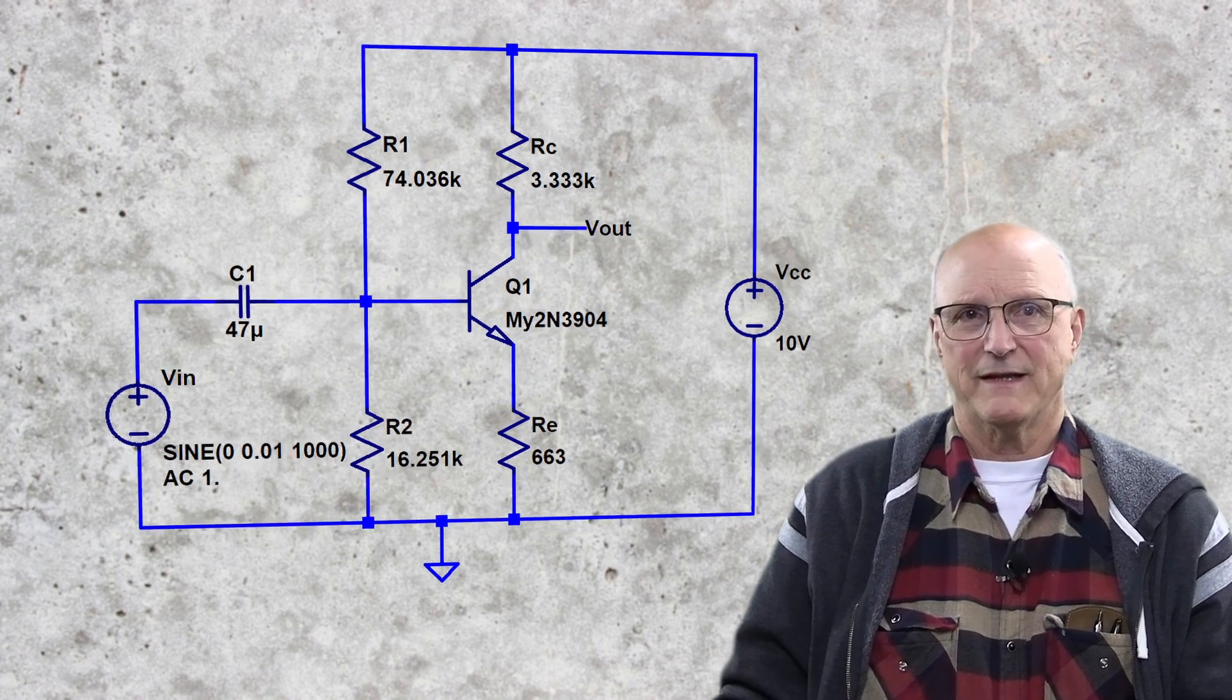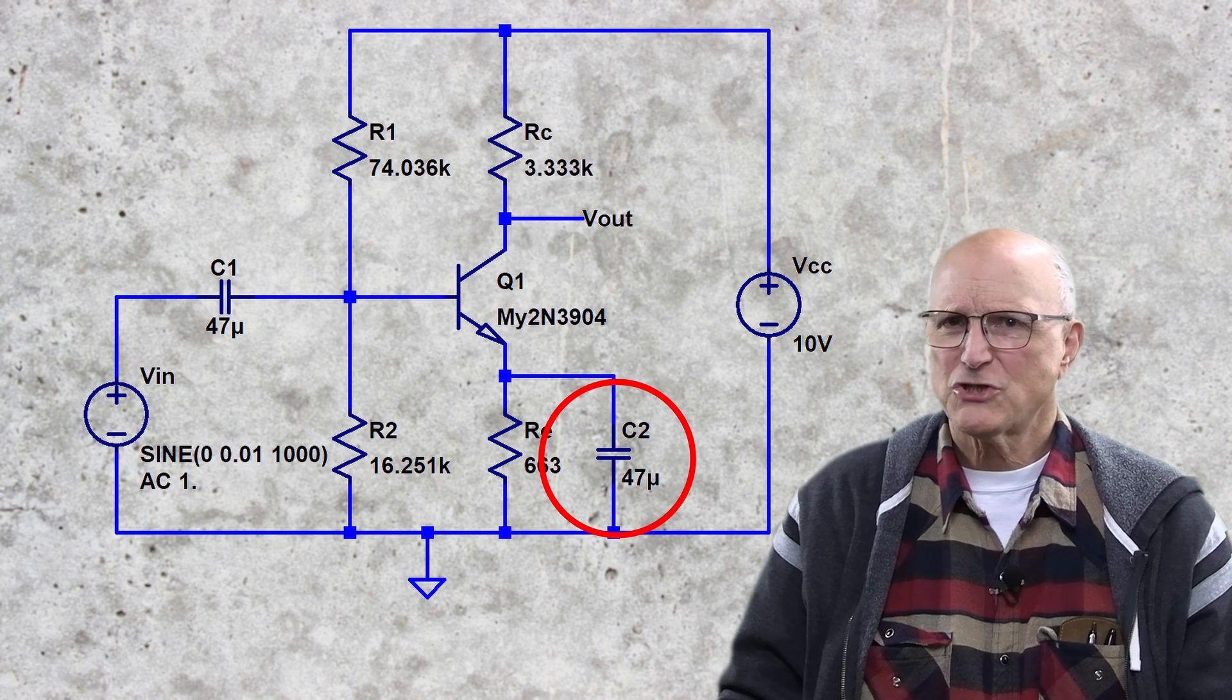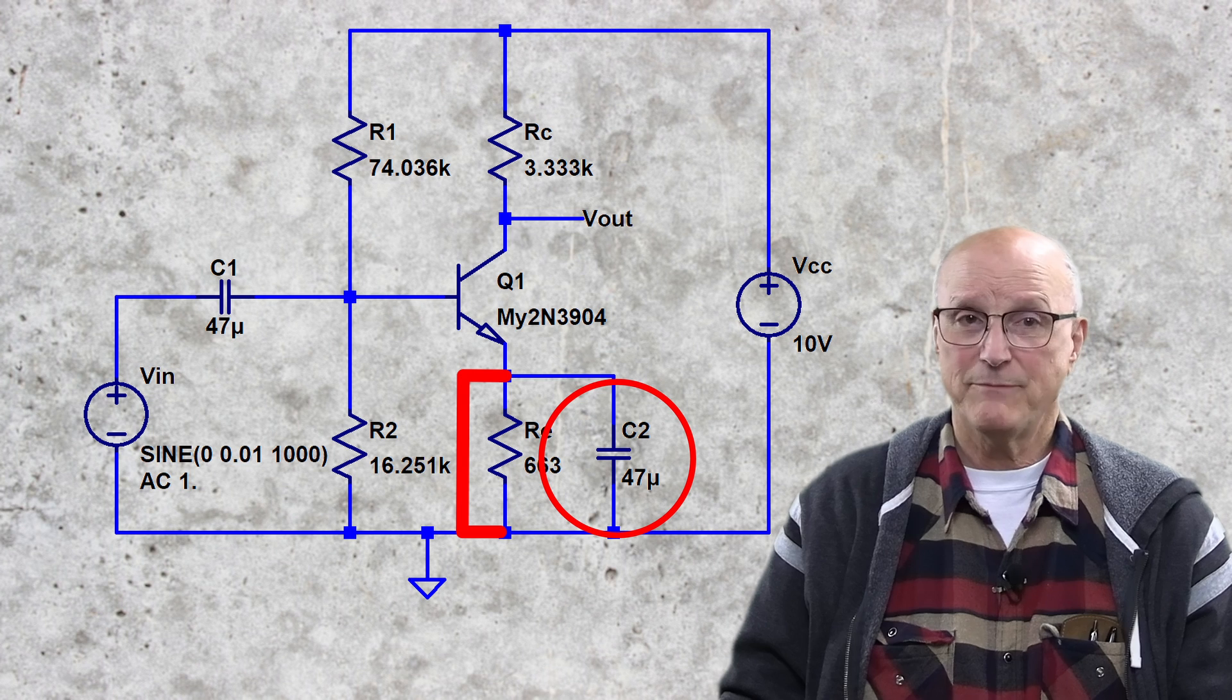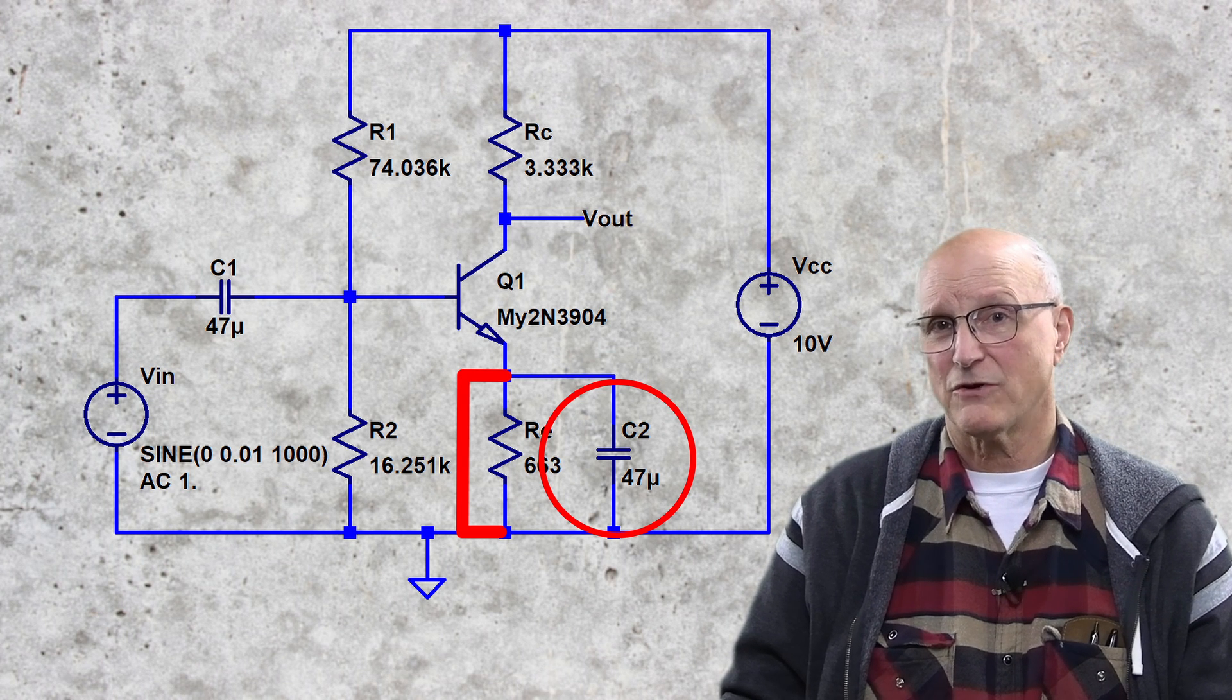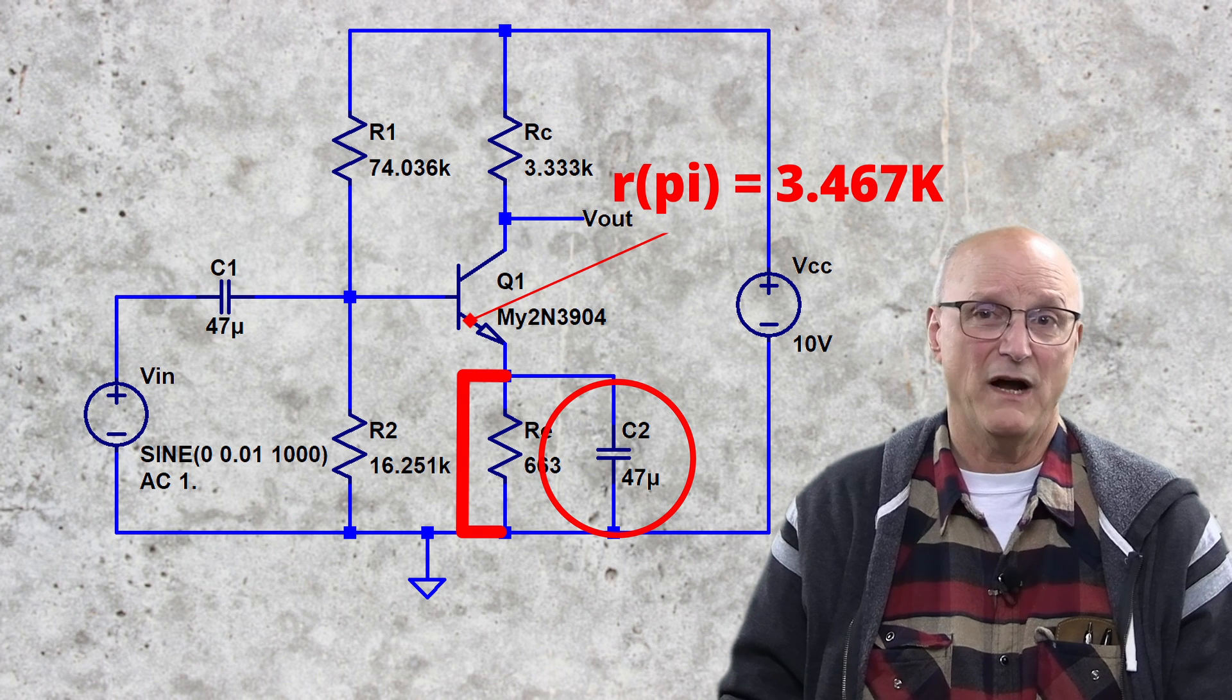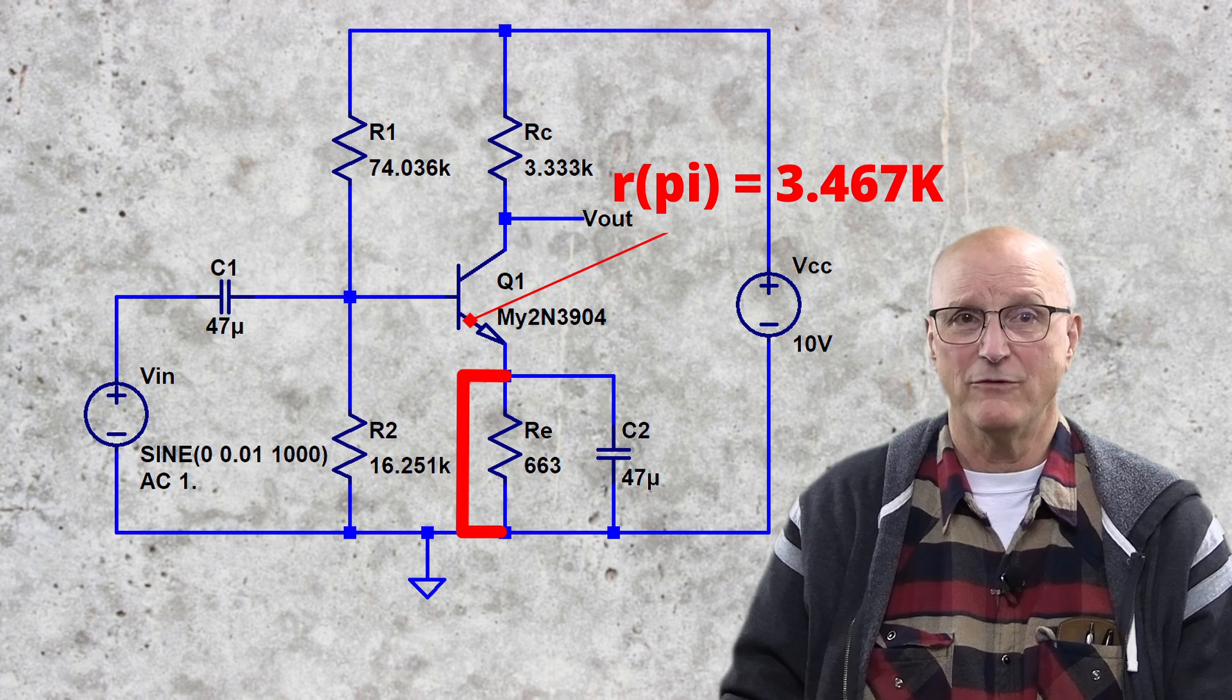Let's take a look at the second circuit. The capacitor essentially shorts out the emitter resistor from an AC perspective, so the total resistance of the second circuit is just Rpi or 3.467 kilohms.